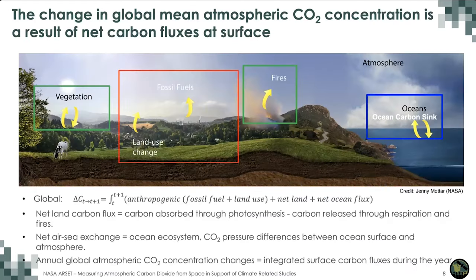What processes cause the change of global mean atmospheric CO2 concentration? To answer this, we need to look at the global carbon cycle. Over land, vegetation exchanges carbon dioxide with the atmosphere through photosynthesis, respiration, and fire. Depending on whether photosynthesis is higher or lower than respiration and fire, this could cause either an increase or decrease of atmospheric CO2. Anthropogenic emissions — including fossil fuel and land use changes — release carbon into the atmosphere, always causing an increase in atmospheric CO2 concentration.